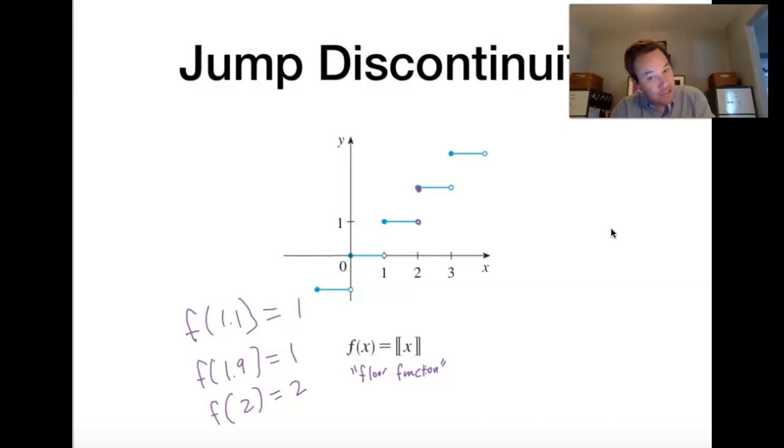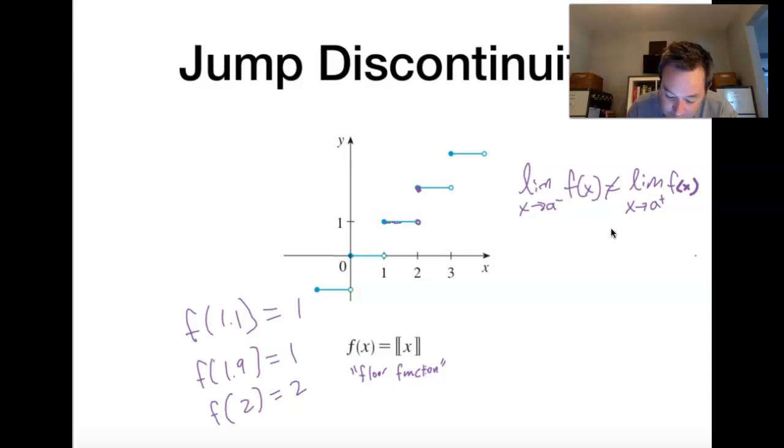And so you get a jump discontinuity when the limit as x approaches a value from the left is not equal to the limit as x approaches that same value from the right. That's what's going to produce that kind of a jump discontinuity. So you can see that as we approach 2 from the left, my x's approach 1. As I approach 2 from the right, my x's approach 2. And thus, I get a jump discontinuity. And this function would have jump discontinuities at every integer.